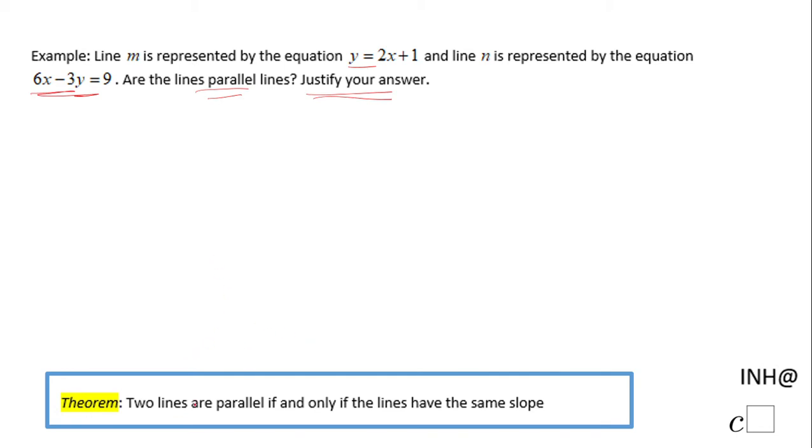How are we going to do this? We're going to look to this theorem which says two lines are parallel lines if and only if they have the same slope. So I'm going to start with line M which has the equation Y equals 2X plus 1, and using the slope intercept form Y equals MX plus B.